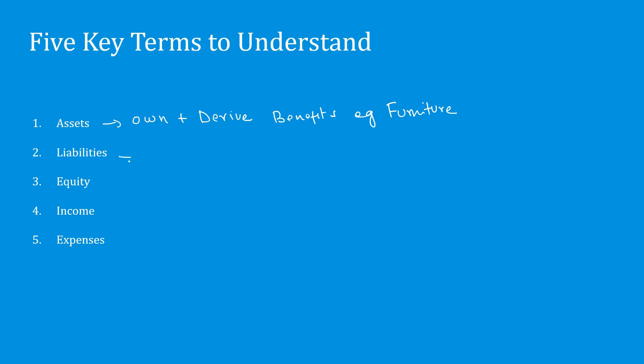Number two, liabilities. Liability is exactly the opposite of asset. Something that we owe to others and that will reduce our benefits in future. For example, loan. Loan is something that we owe to another party, maybe to a friend, to a bank, or to an institution. So in future when we are going to repay that loan back, it will reduce our cash. Liability is something that we owe and it will reduce our benefit in future.